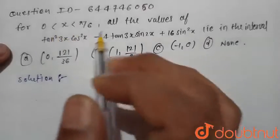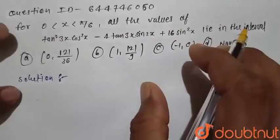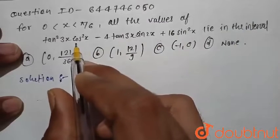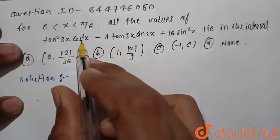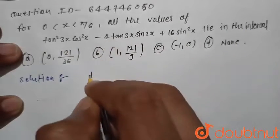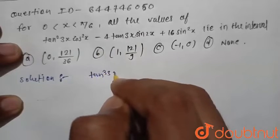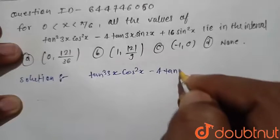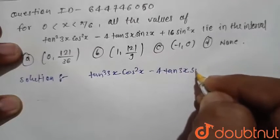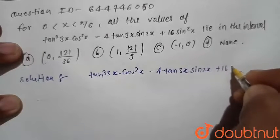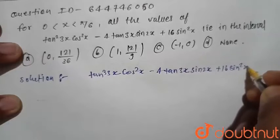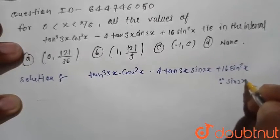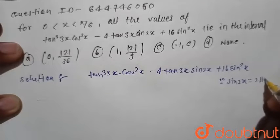For x from 0 to π/6, all the values of this equation lie in the interval. We are given the equation: tan³(3x)·cos²x minus 4·tan³(3x)·cos²x minus 4·tan(3x)·sin(2x) plus 16·sin²x. We know sin(2x) can be written as 2·sin(x)·cos(x).